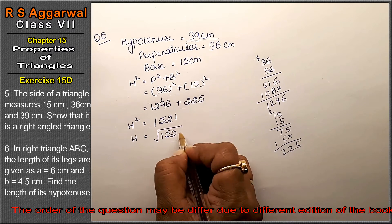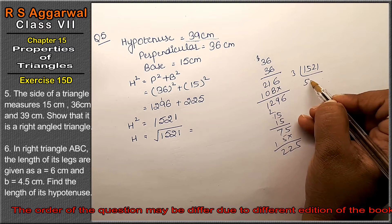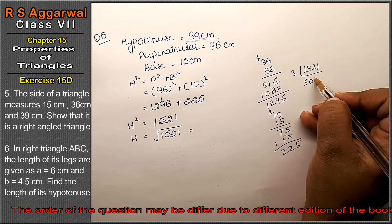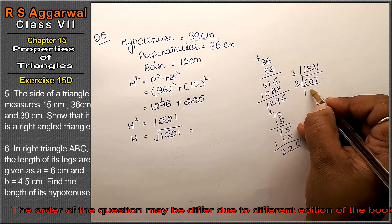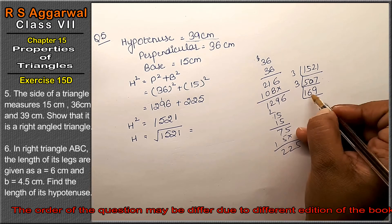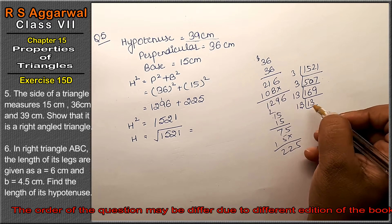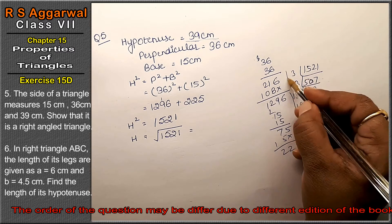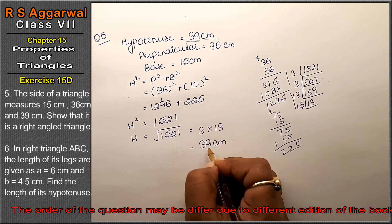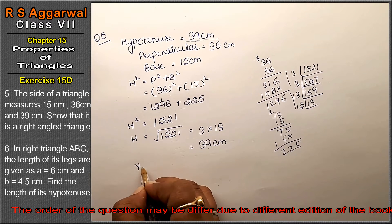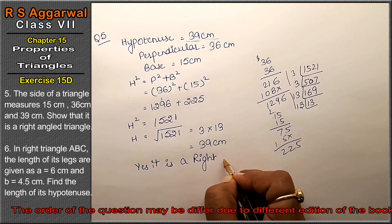So H equals square root of 1521. Friends, you should remember squares up to 20. We can see that 1521 forms pairs of two, and taking the square root gives 3 into 13, that is 39 cm. It came out the same — that means yes, it is a right-angled triangle.